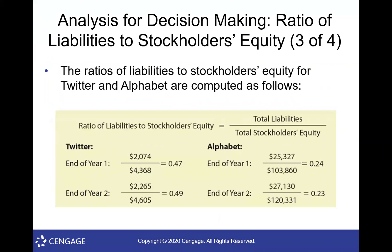There's an example of them working it out for Twitter. You'll see that their liabilities to stockholders' equity is 0.47. Alphabet — that's who owns Google, Alphabet Corporation — has 0.24. So we can look at those two and quickly say Google has a lot less debt relative to its stockholders' equity than Twitter. Using these ratios helps us not worry about the size of the companies and just say, as a percentage of liability to equity, who's stronger. We use that a lot when we're doing investing.